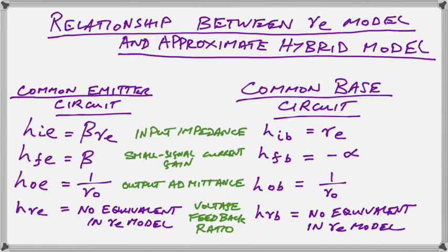So now these are the equivalences. The HIE is exactly equal to beta RE, and the HFE is just another way of describing beta. In fact, most transistor sheets give HFE. They don't give you beta at all. But HFE is equal to beta, so you just take that number and you can use that for beta when doing your beta RE model.